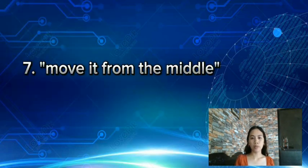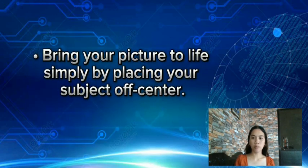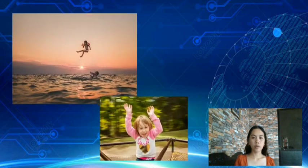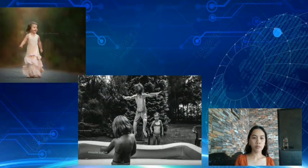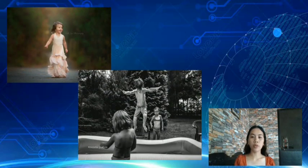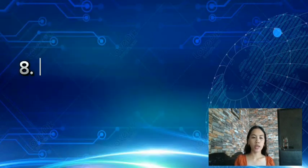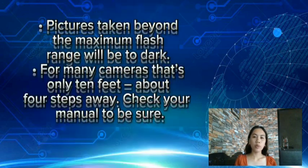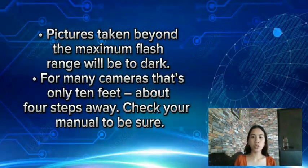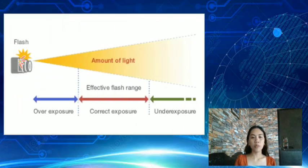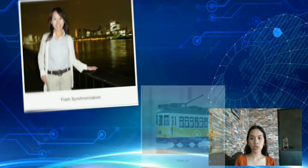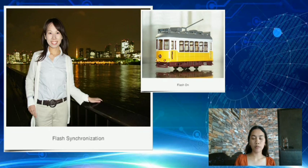Tip 7: Move it from the middle. The middle of your picture is not the best place for your subject. Bring your picture to life by simply moving your subject away from the middle. Tip 8: Know your flash range. The number one flash mistake is taking pictures beyond the flash range, because pictures taken beyond the maximum flash range will be too dark. For many cameras, the maximum flash range is less than 15 feet, about 5 steps away.